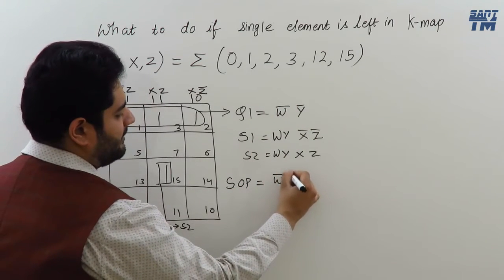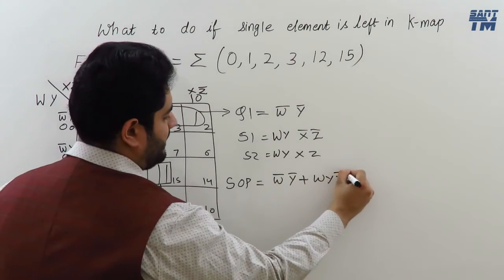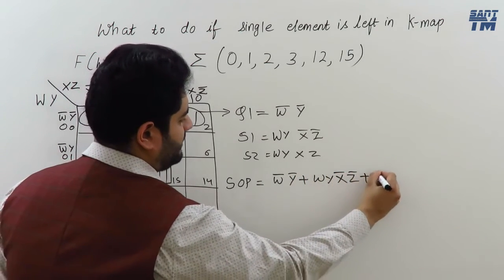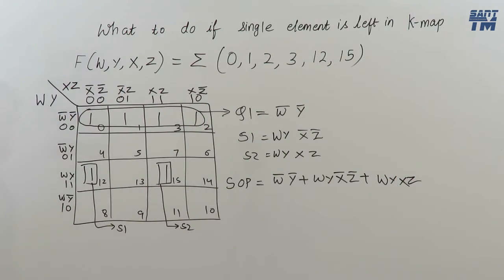So, SOP expression will be W bar, Y bar plus W, Y, X bar, Z bar plus W, Y, X, Z. This is the required SOP expression. And this is how we deal with the single elements.